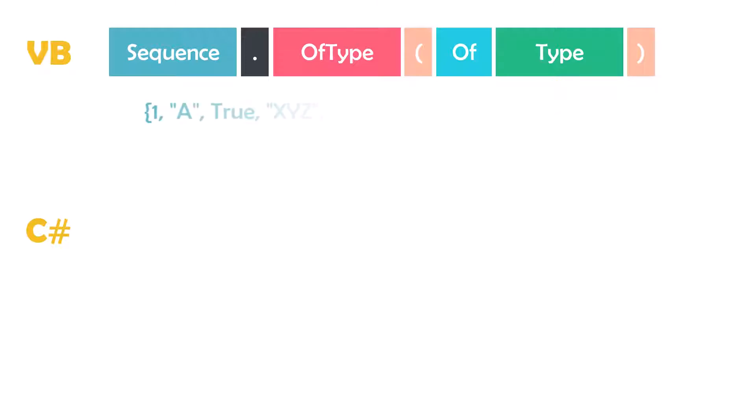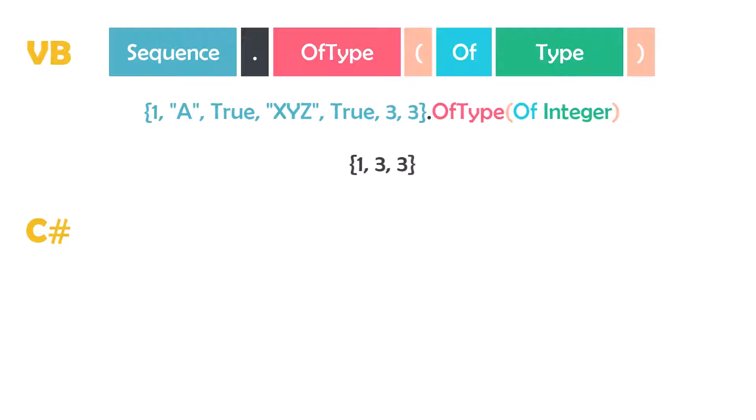Here's a Visual Basic example: I have an object array which contains numbers, strings, and booleans. I use the operator to get only the integer elements from this array. The result of this query is a collection containing only the integer numbers. This is how to use the operator in Visual Basic.